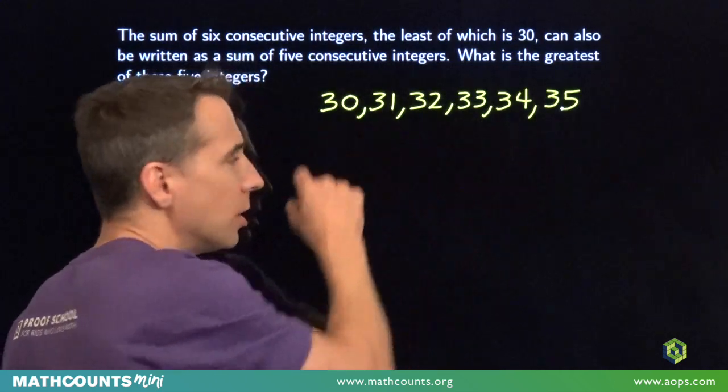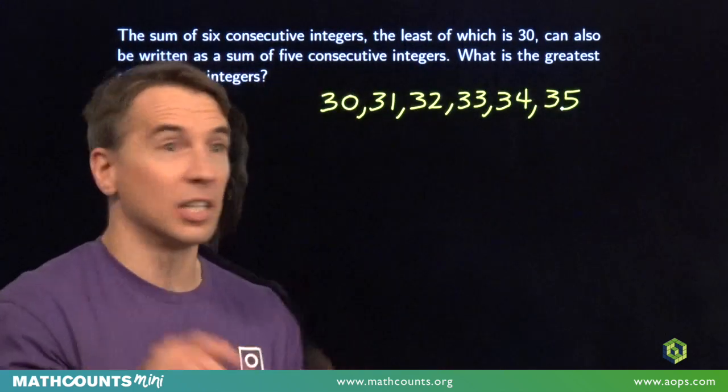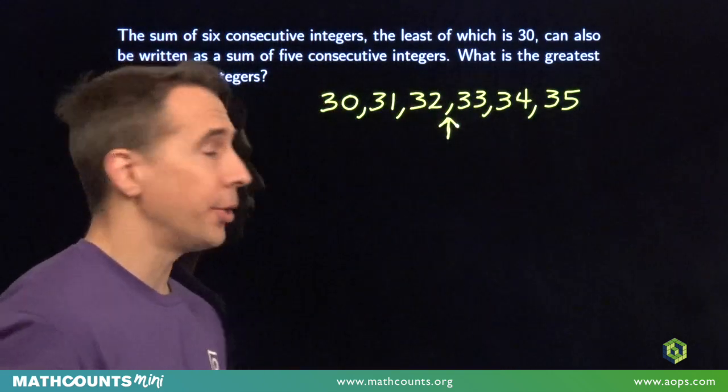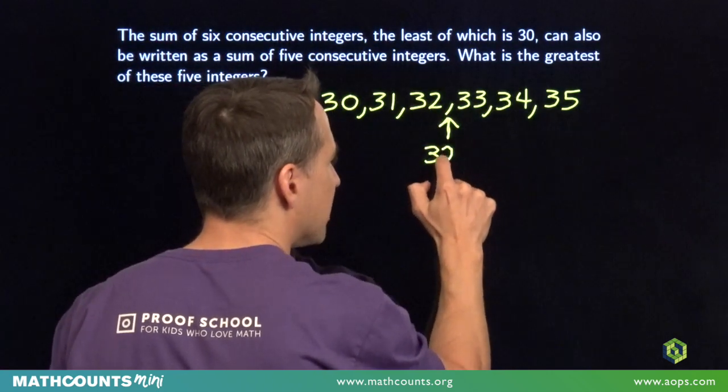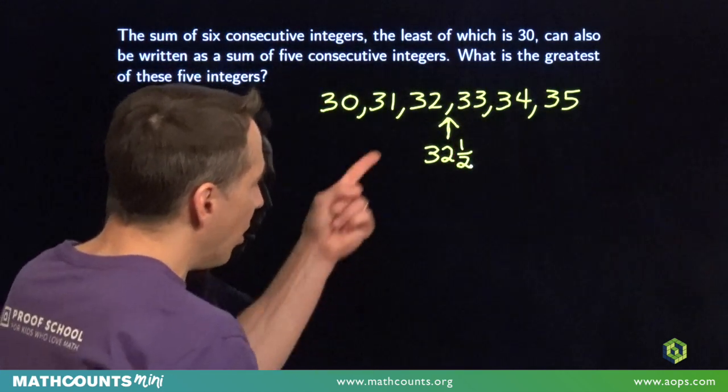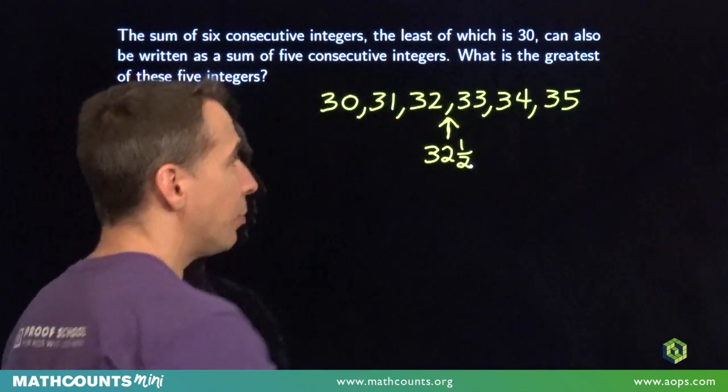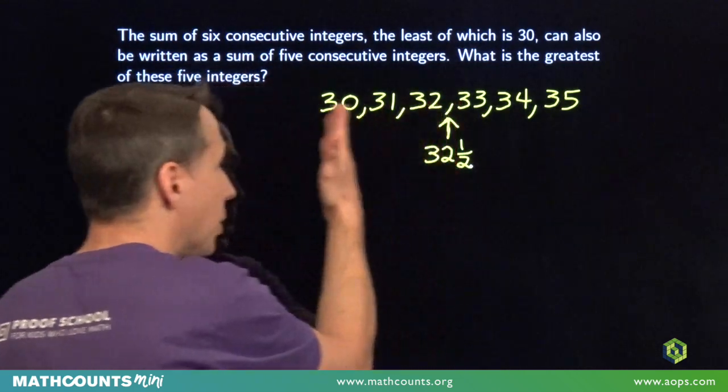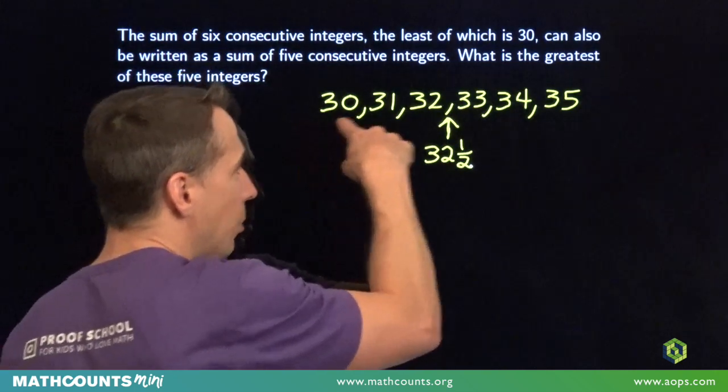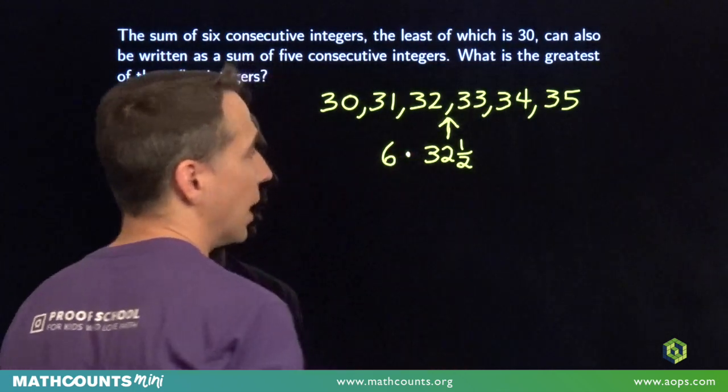And these numbers, they're equally spaced out. They're consecutive numbers. So the average of these six numbers is the number that's right in the middle, right in between 32 and 33. The average of these six numbers is 32 and a half. Now, if you don't believe me, check this out. Half below, half above. One and a half below, one and a half above. Two and a half below, two and a half above. The numbers below average balance the numbers above average. Our average is right there. So the sum of these six numbers is six times their average.